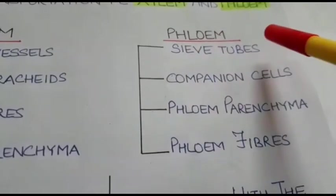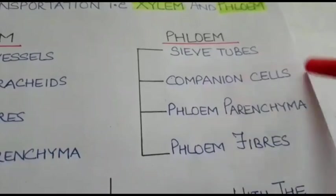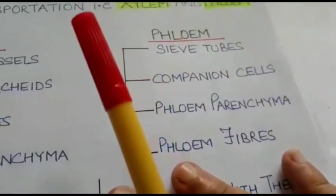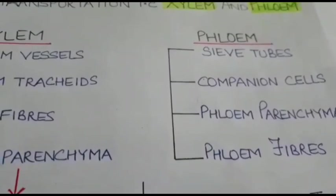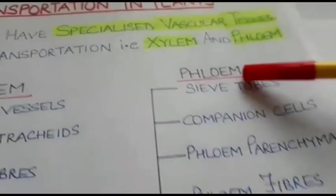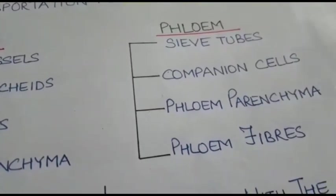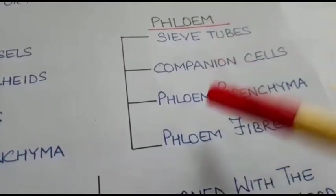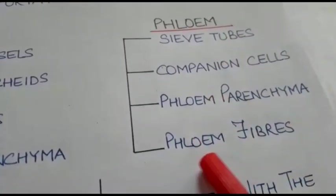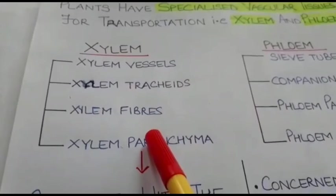In the same way, phloem is also made up of four types of cells: sieve tubes, companion cells, phloem parenchyma, and phloem fibers. In phloem, sieve tubes are the living cells, companion cells are the living cells, phloem parenchyma are the living cells — only the phloem fibers are the dead cells.